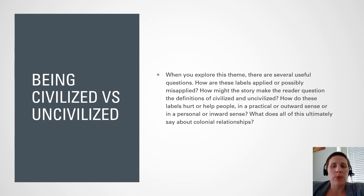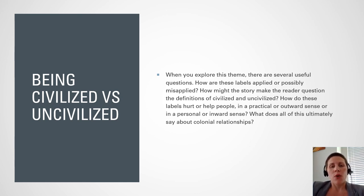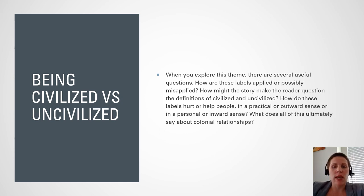Those who are labeled uncivilized get placed below those who are civilized on the scale of humanity. Regardless of whether the labeler has kind intentions, the connotation still ought to be considered in an analysis. When a colonizer uses these terms, it's like saying: this person needs to be taught how to live like a real human being, and I'm just the person for the job. How does labeling a person or group as other imply that they are less civilized? How are these labels applied or possibly misapplied? How might the story make the reader question the definitions of civilized and uncivilized, and how do these labels hurt or help people in a practical or personal sense? What does all of this ultimately say about colonial relationships?